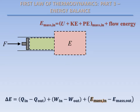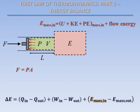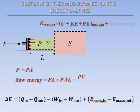Suppose the mass that will enter our system is at some pressure P, and that it has some volume V. The force applied on the mass is equal to the pressure of the mass times its cross-sectional area A. In order to push all of the mass into our system, this force must act over the entire length of the mass, L. The flow energy, then, is the force times the length. This can be expressed as the pressure times the volume. This flow energy is added to the total energy of the mass that will enter our system.